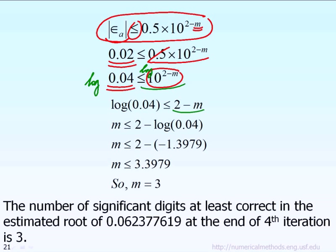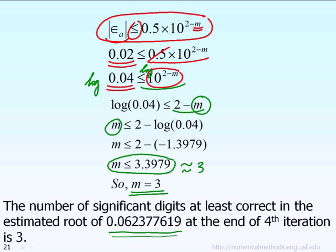So from that equation, we can solve for M. And eventually, you will get M is less than or equal to 3.3979. So if you round it off to the nearest integer, it will be M is about 3, which means there is 3 significant figures, at least. At least there are 3 significant figures that you can have a confidence in your answer using the false position method. At least 3 significant digits you can trust from your final answer using the false position iterative method.